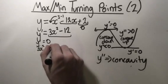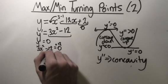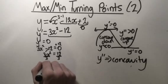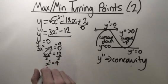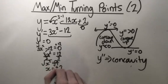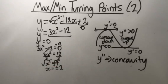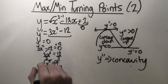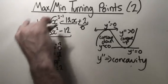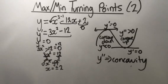We want 3x squared minus 12 to equal zero, then we just solve for x. We add 12 to the other side to get 3x squared equals 12, then divide both sides by 3 to get x squared equals 4, then square root both sides — making sure we get plus or minus 2 as our answer, since minus 2 squared is also 4. Once we have these two solutions, we can go on to find the y coordinates at those points, though we won't do that in this example.